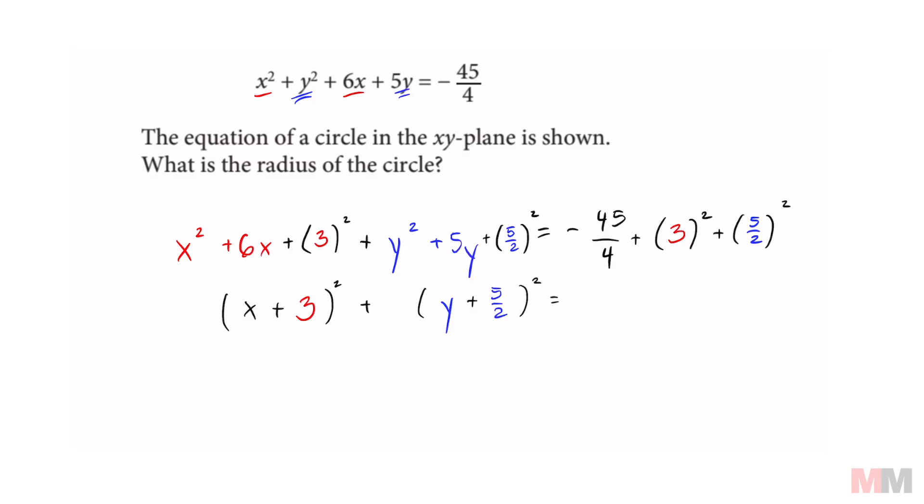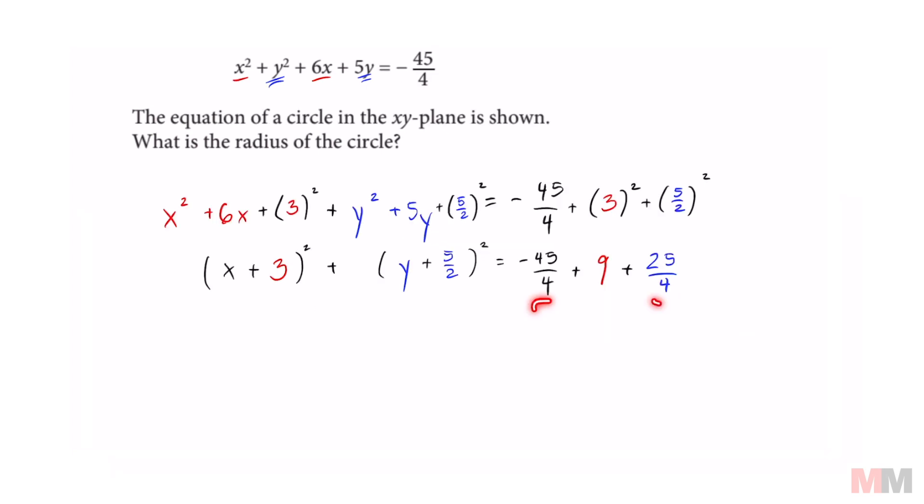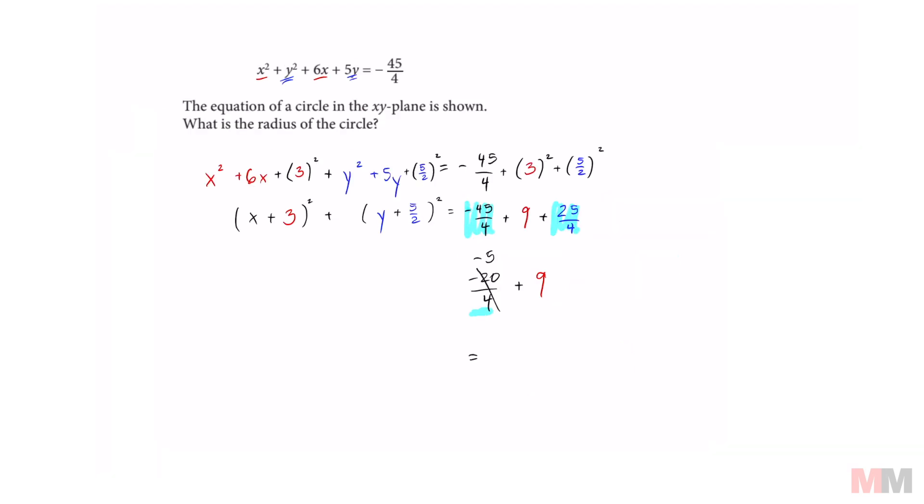Now we just got to clean up the right side. That's going to be plus 3 squared is 9, and 5 halves squared is 25 over 4. Luckily, these two have a common denominator. So negative 45 plus 25, that's going to simplify down to negative 20 over 4 plus 9. And negative 20 over 4 is the same thing as negative 5 plus 9, which then equals 4.